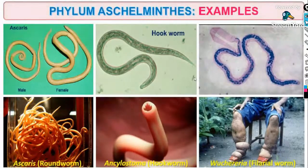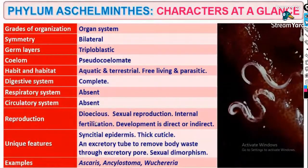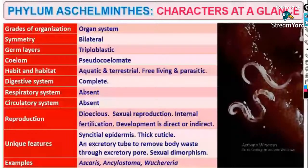Take a screenshot. They have organ system level of organization, bilateral symmetry, triploblastic, pseudocoelomate. Complete digestive system but no respiratory and circulatory system. They are dioecious. Sexual reproduction, internal fertilization, and development may be direct or indirect.